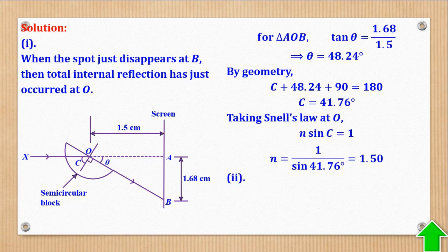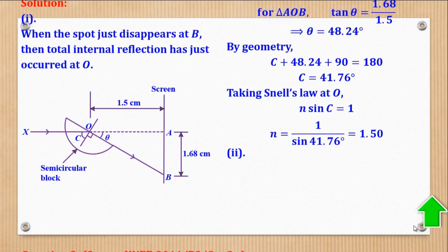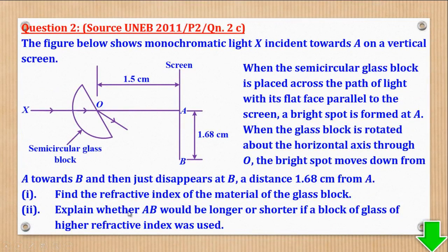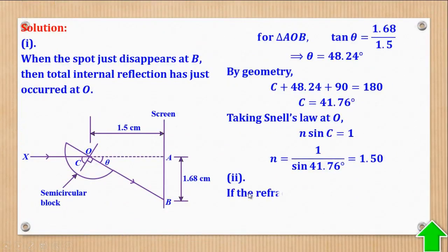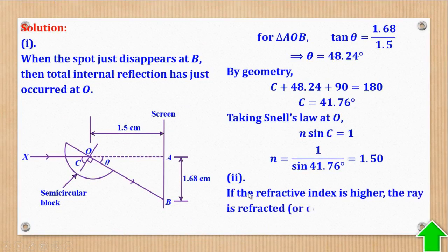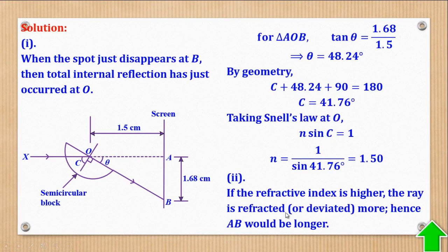Roman ii — explain whether AB would be longer or shorter if a glass block of higher refractive index was used. If the refractive index is higher, the critical angle is smaller, so total internal reflection occurs sooner, and the ray is deviated more. Hence AB would be longer.